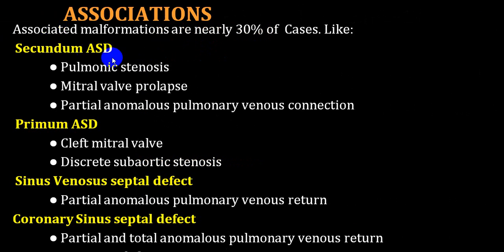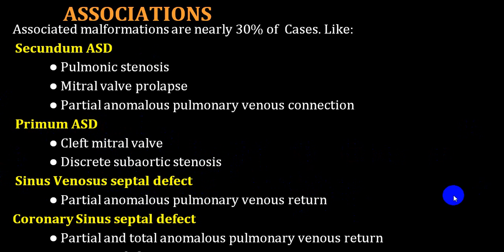Ostium secundum can be associated with pulmonary stenosis, mitral valve prolapse, or partial anomalous pulmonary venous drainage. Ostium primum is frequently associated with mitral valve abnormalities or sub-aortic stenosis. Sinus venosus is associated with partial anomalous pulmonary venous return from the right pulmonary vein into the superior vena cava or right atrium. There is also a coronary sinus septal defect variety with partial or total anomalous pulmonary venous return and persistence of a left superior vena cava.